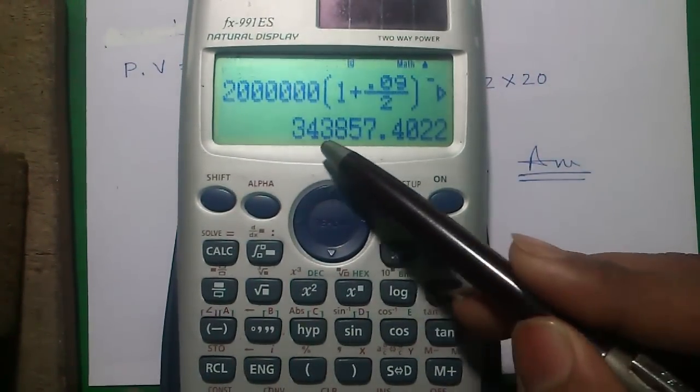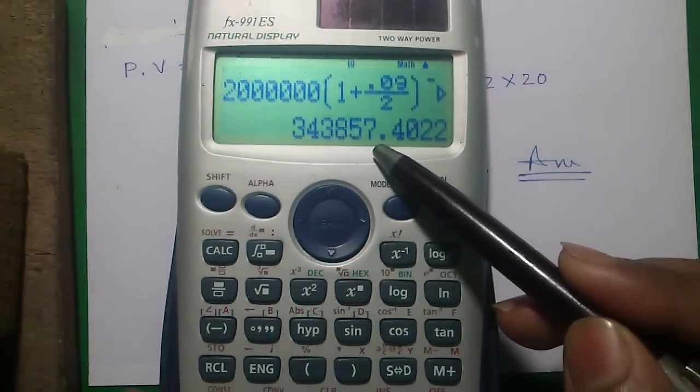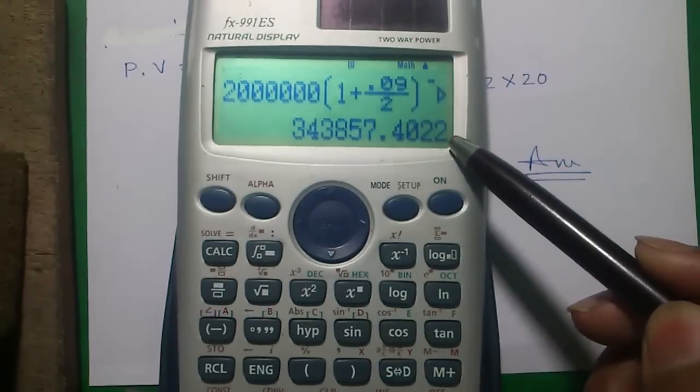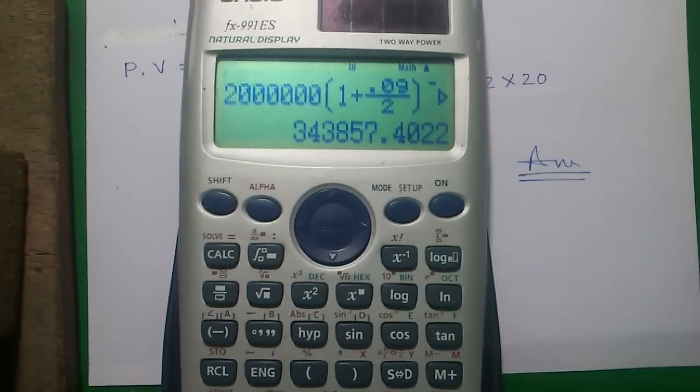So it will be 3,43,857.4022. Isn't it easy using our calculator?